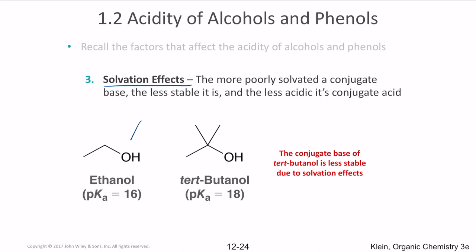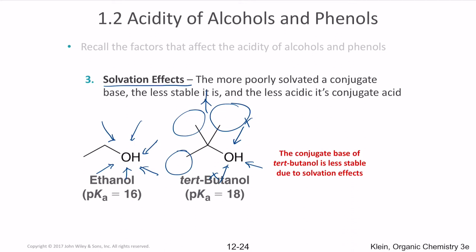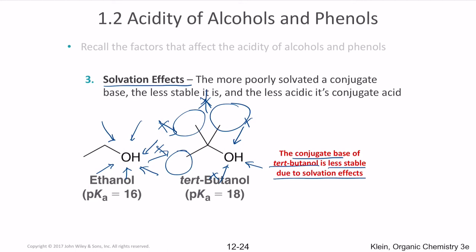The last factor is solvation. Ethanol can be attacked from any direction, giving its conjugate base good solvation. Tert-butanol, however, is sterically hindered — the bulky side chains block attack from most directions. As a result, the conjugate base of tert-butanol is less well-solvated and therefore less stable, meaning the more sterically hindered the structure, the less stable its conjugate base.